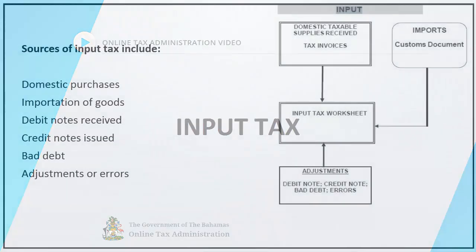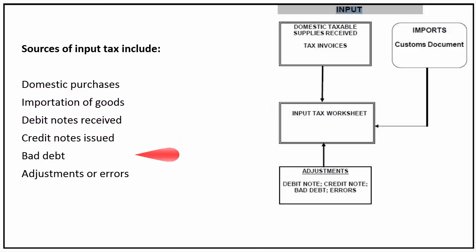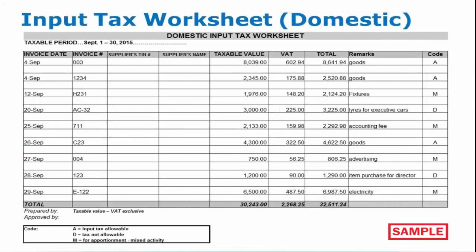Input tax can come from several sources, mainly local purchases and imports. Sources of input tax include domestic purchases, importation of goods, debit notes received, credit notes issued, bad debt, adjustments, or errors. Use the input tax worksheet when recording input tax paid on purchases and expenses. Your supplier's tax invoices will provide all of the details needed.